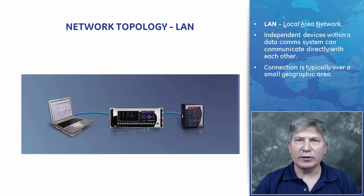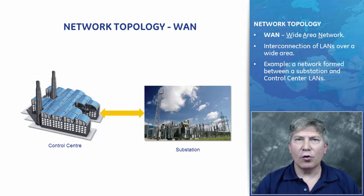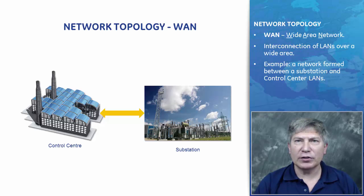LAN is an abbreviation for local area network. Typically, a LAN can be considered as all of the components that make up a data communication system which allows a number of independent devices to communicate directly with each other over a small geographical area such as a building. A WAN, or wide area network, is formed by the interconnection of LANs over a wide area. A typical utility example would be the network formed by the interconnection of the substation and control center's LANs, with distances ranging from a few to hundreds of kilometers.